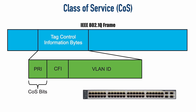We do that with a COS, a class of service marking. Inside a .1Q frame traveling over a .1Q trunk, we have four bytes that get added to all the non-native VLANs. Within those four tag bytes, we have three bits called the priority bits. Those bits are used to assign a class of service value for this frame. With three bits at our disposal, we have eight possible values — two raised to the power of three is eight — meaning COS values range from zero through seven.